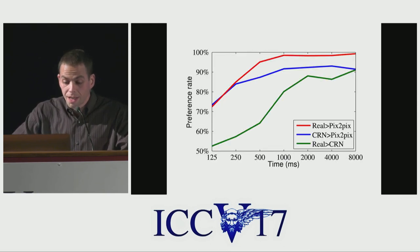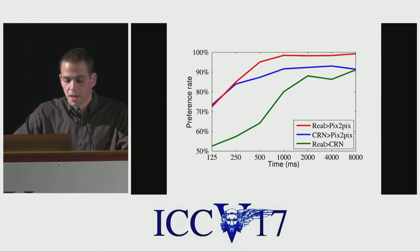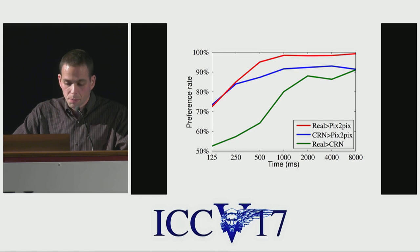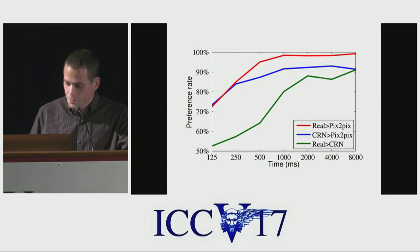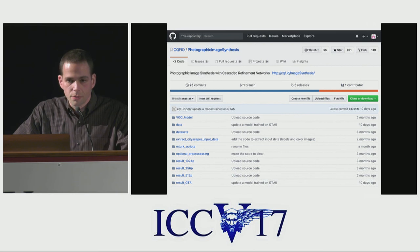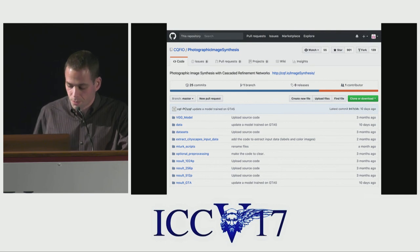Here are timed pairwise comparisons — an interesting experiment showing how long it takes people to see differences. Even in one-eighth of a second, people rank our images as more realistic than the baselines. Chance is at 50%; 100% means people with full reliability say our images are more realistic, and for many baselines the numbers are very high. Our code has been released along with all supporting scripts and data — you're welcome to use it. Thank you very much.